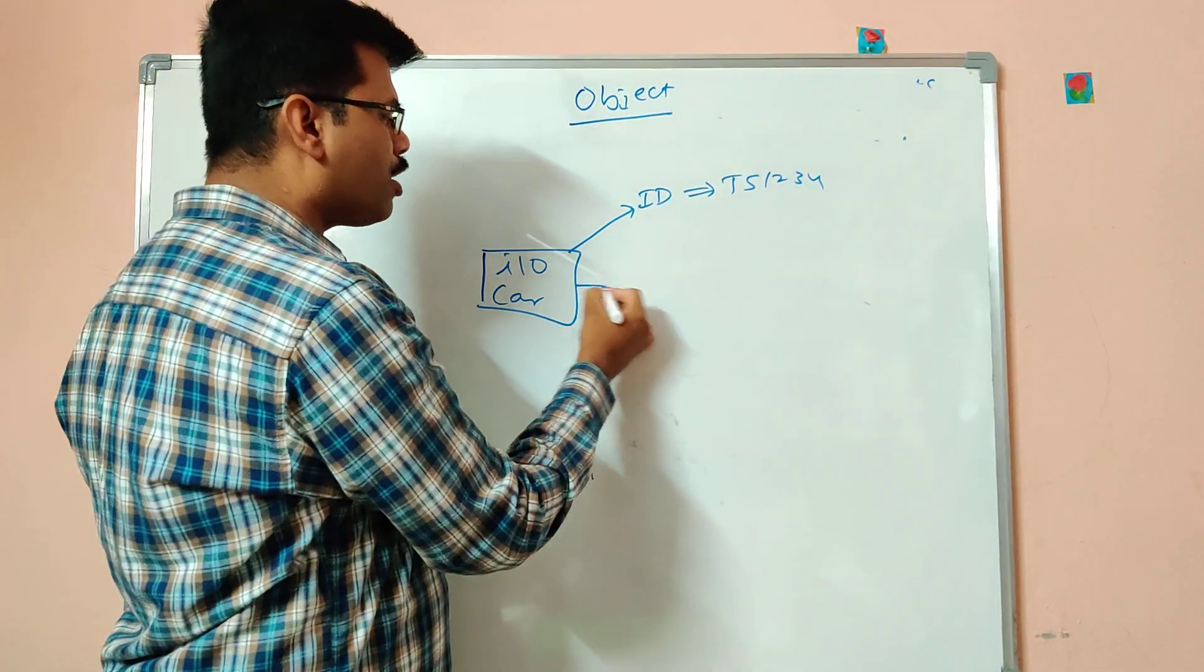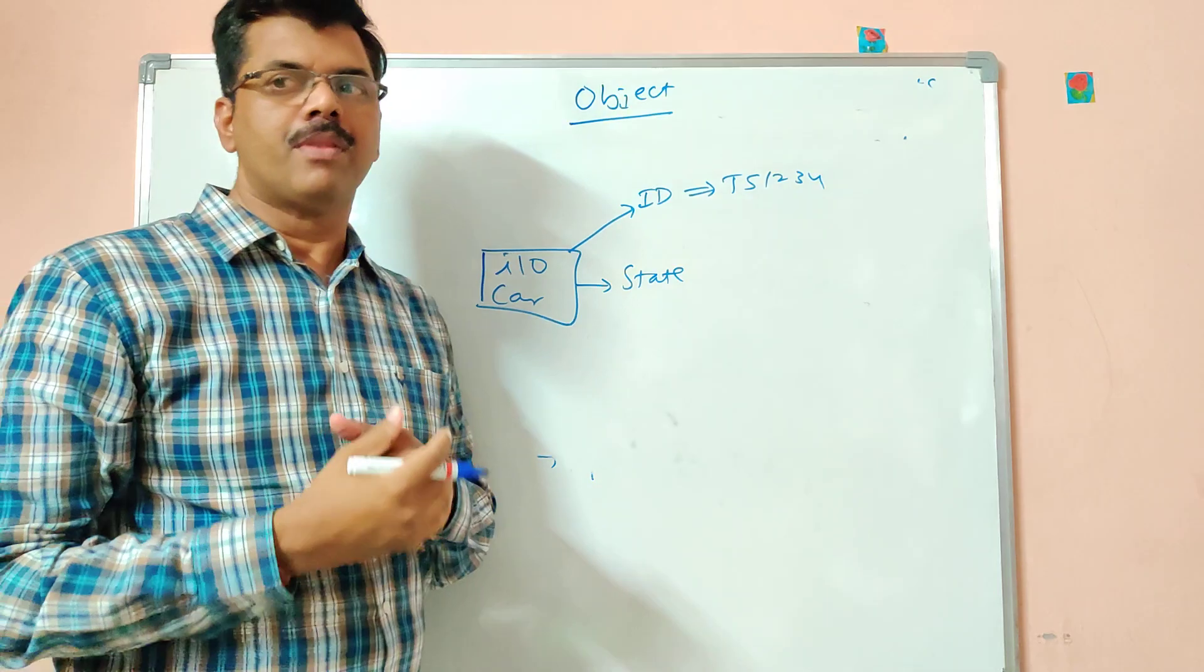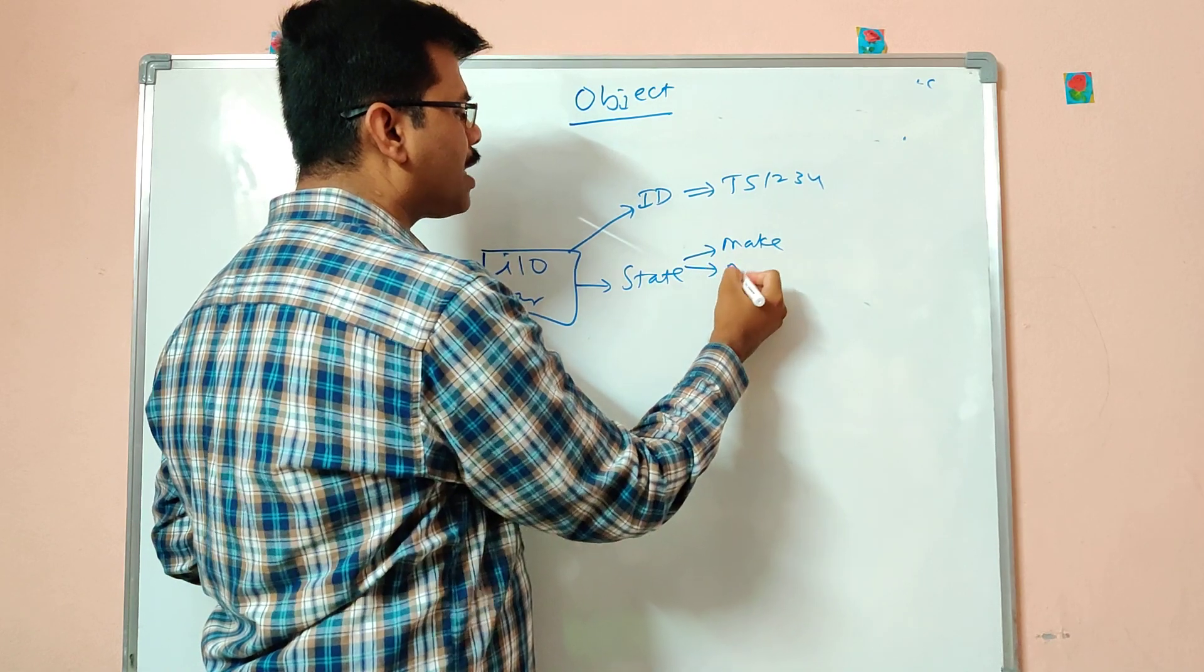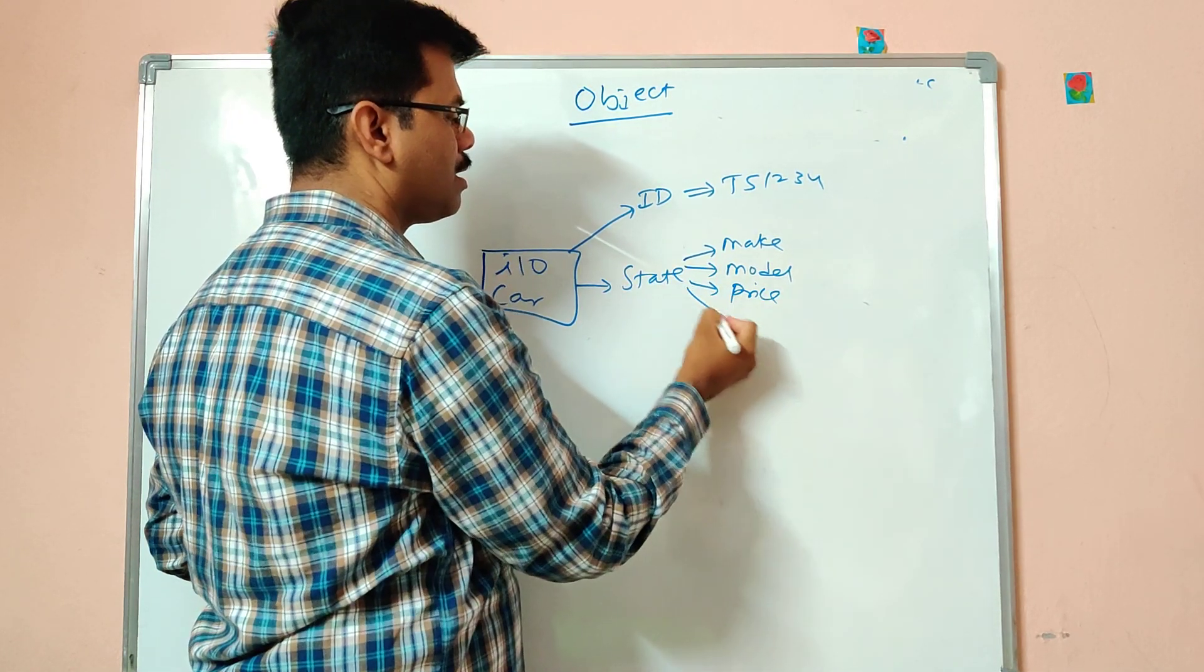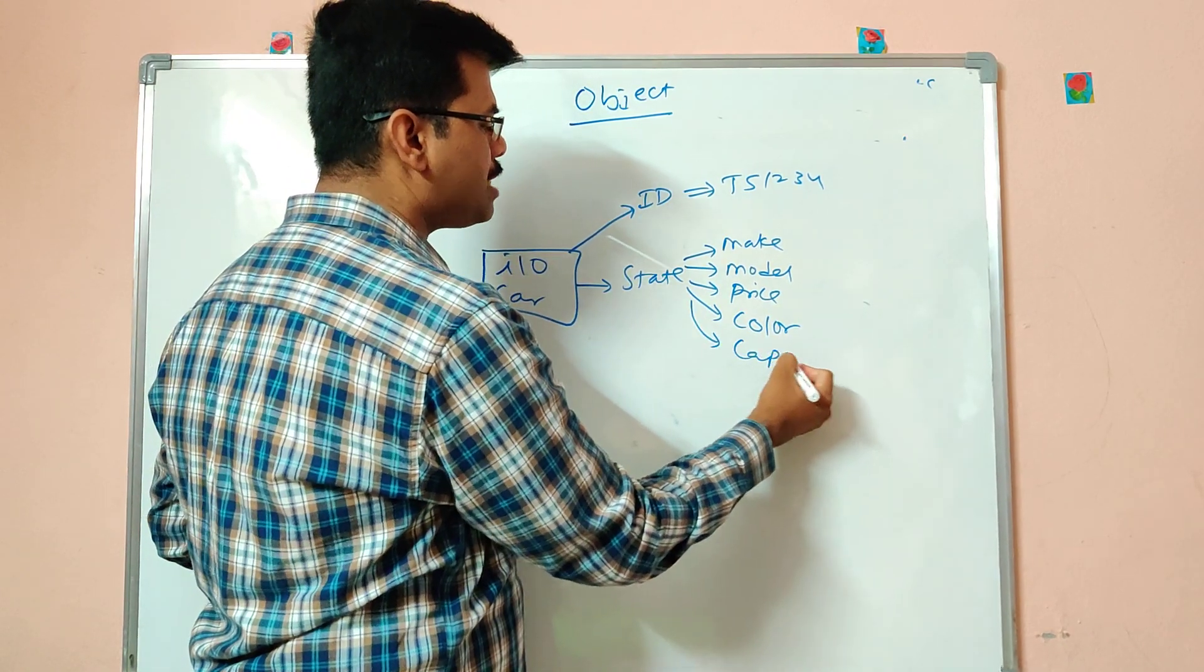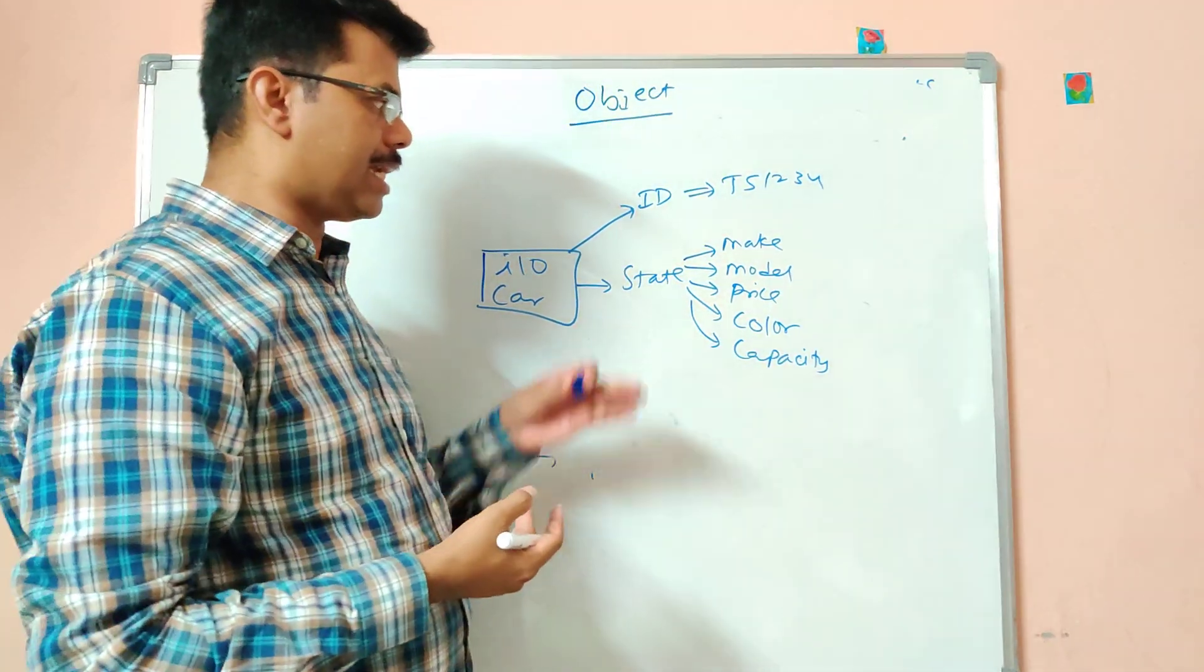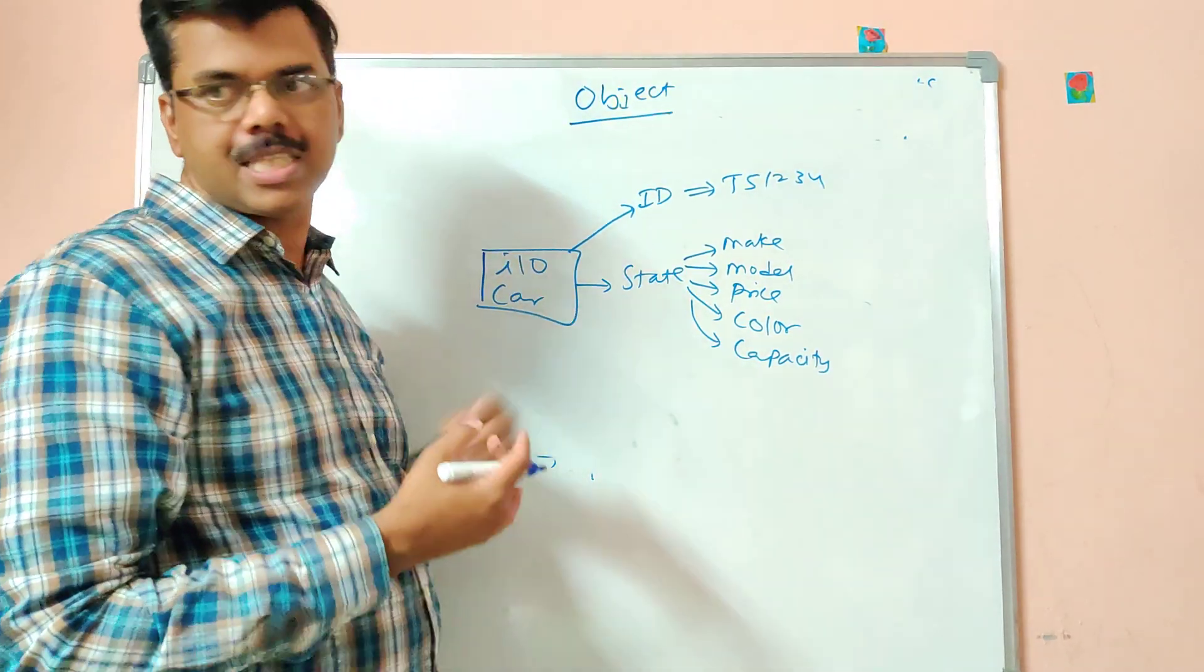Then for a car, we go with a state. So the meaning of state is like the properties what we give to the car. Like example we can check for the make. The model of the car. The price of the car. The color of the car. The capacity like seating capacity or engine capacity. The fuel type like petrol or diesel. So the properties whatever we give to the object is called a state.